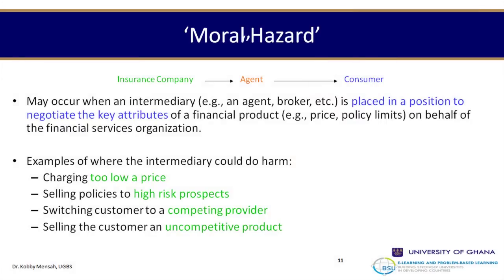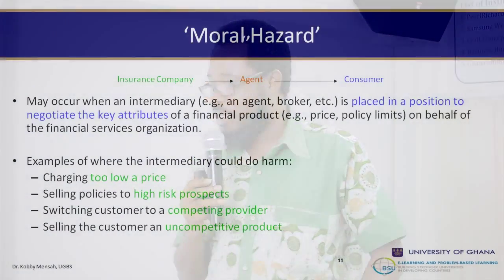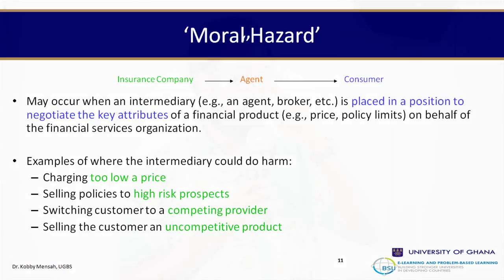Examples of moral hazard include selling policies to high-risk prospects when they should pay a higher premium, switching customers to a competing provider — which we have seen in telecommunications and banking — and selling the customer an uncompetitive product. Some agents switch customers or accounts just because of the commission they want to earn. When consumers later find out about it, they become disappointed towards the brand.